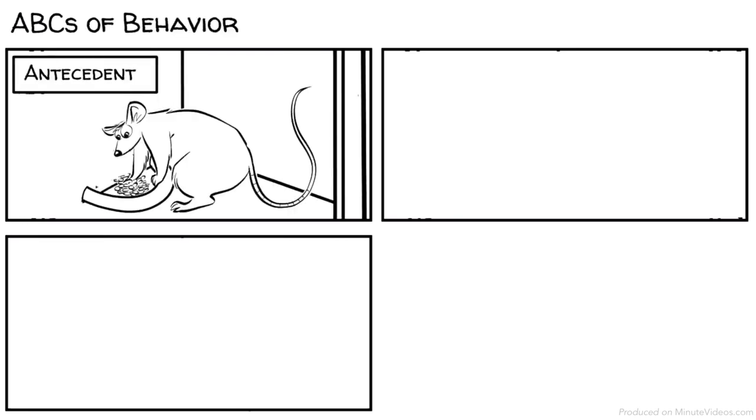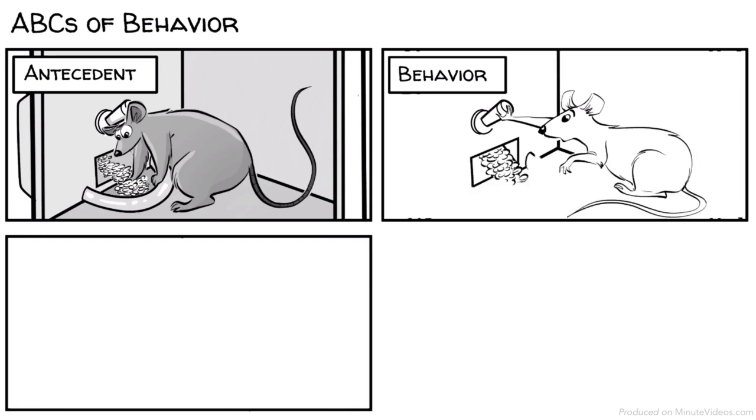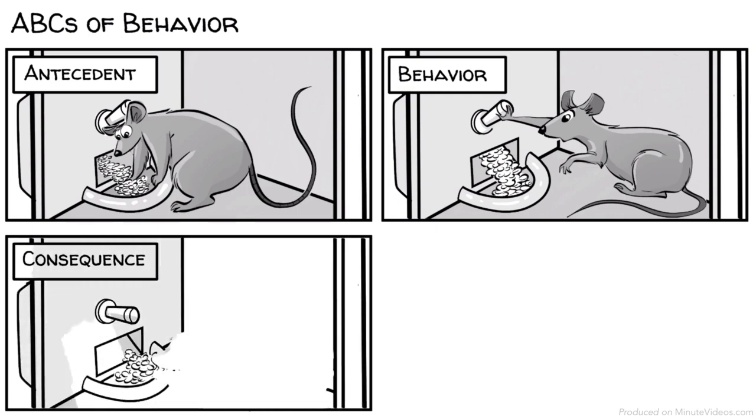Conditioning happens in a three-term contingency, today known as the ABCs of behavior. A stands for antecedent. The rat accidentally hits the lever that triggers the release of food. B stands for behavior and refers to the response. The rat keeps pressing the lever. C stands for consequence. Food keeps coming out.